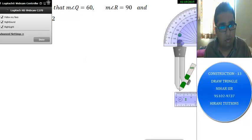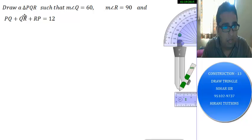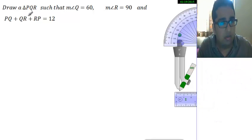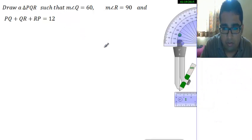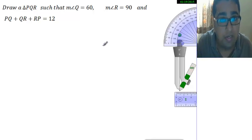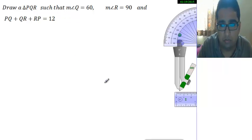Hello friends, in this video we will draw a triangle PQR. This refers to construction number 11, and this is very interesting. Draw a triangle PQR in which angle Q equals 60°, angle R equals 90°, and PQ plus QR plus RP equals 12 cm.